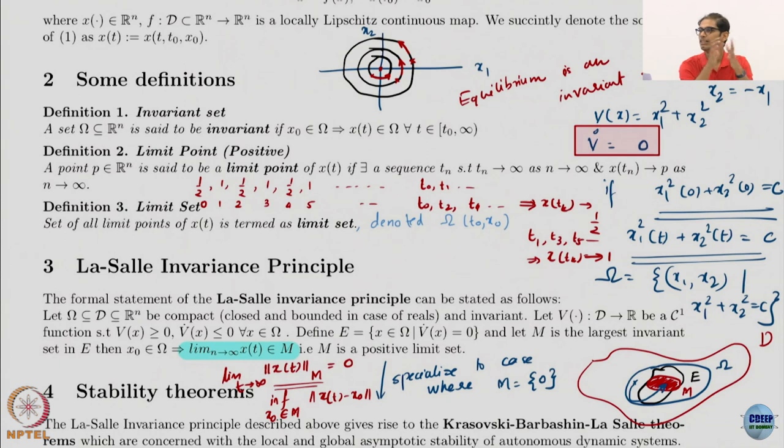I am asking you, so boundedness obvious because x1 square plus x2 square is c. So neither x1 nor x2 can go to infinity. Boundedness is obvious. Compact, sorry, closed. Is it closed?